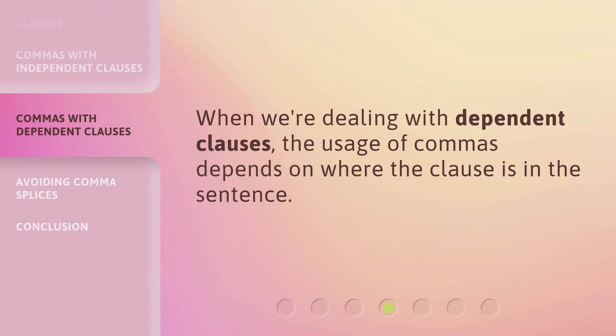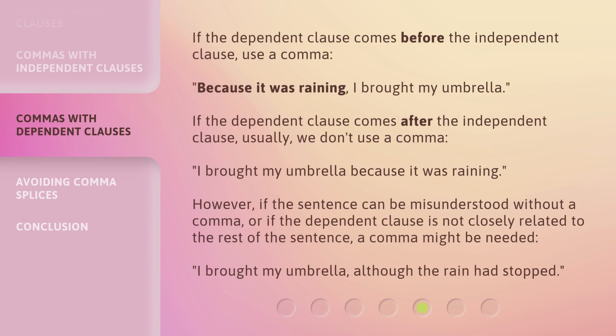When we're dealing with dependent clauses, the usage of commas depends on where the clause is in the sentence. If the dependent clause comes before the independent clause, use a comma: 'Because it was raining, I brought my umbrella.' If the dependent clause comes after the independent clause, usually we don't use a comma: 'I brought my umbrella because it was raining.' However, if the sentence can be misunderstood without a comma, or if the dependent clause is not closely related to the rest of the sentence, a comma might be needed: 'I brought my umbrella, although the rain had stopped.'